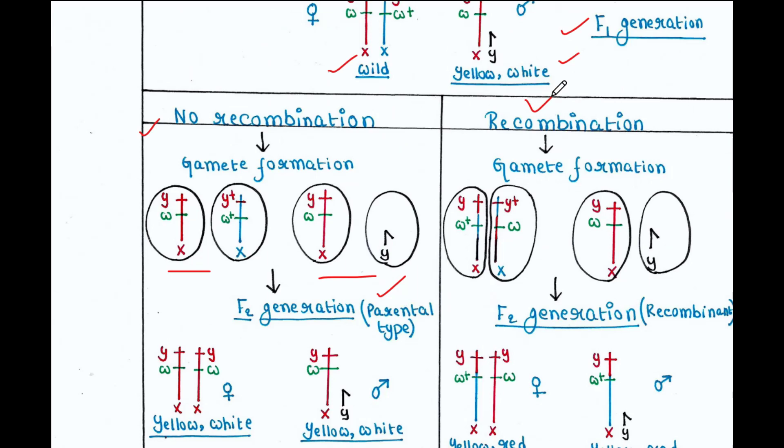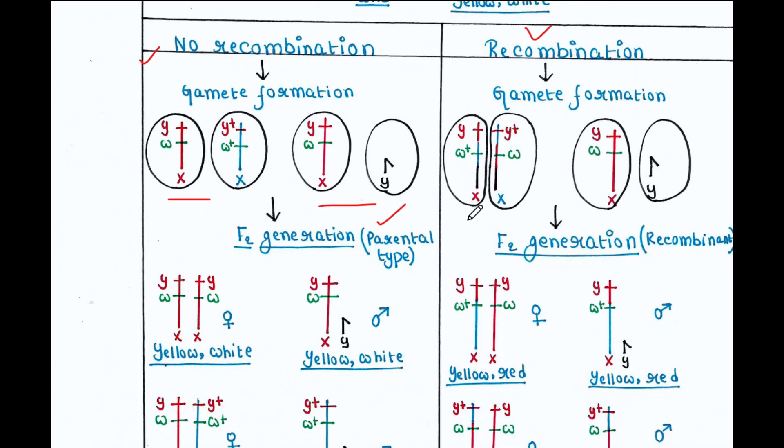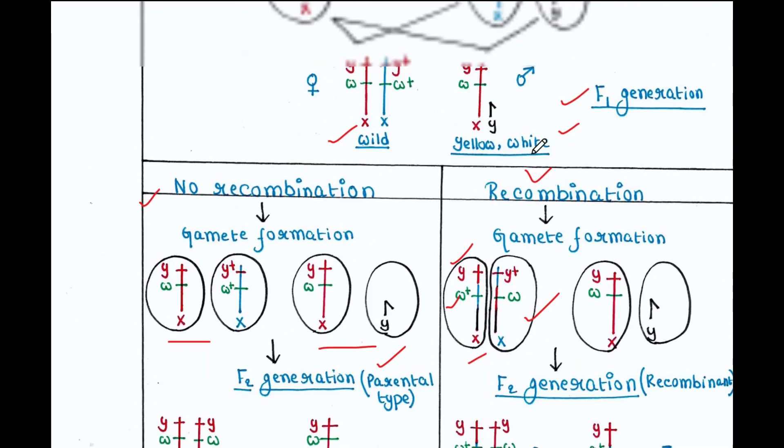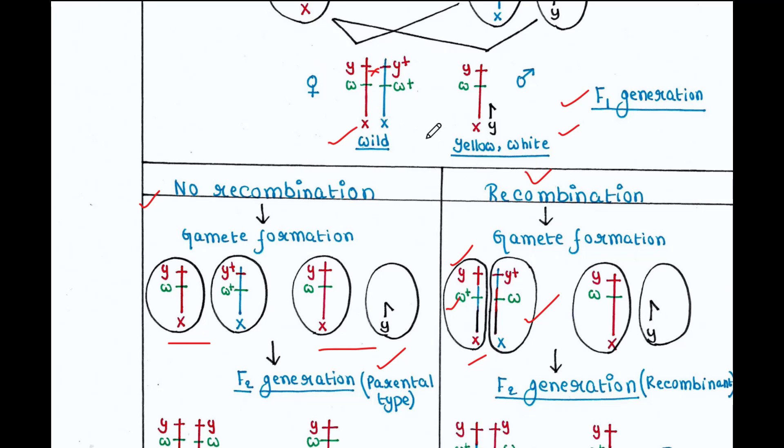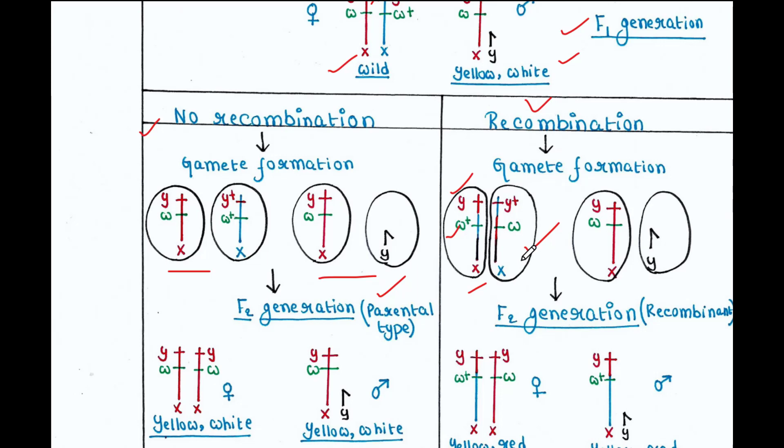Since these F2 flies are phenotypically same as their parents, they are called parental type. Now let's talk if recombination occurs. If recombination occurs between two genes, we get different types of female gametes. One gamete contains Y allele along with W-plus instead of W, and the other gamete contains Y-plus allele along with W instead of W-plus. So recombination happened here between Y and W genes. But male gametes will not show any such recombination since males contain only one X chromosome.